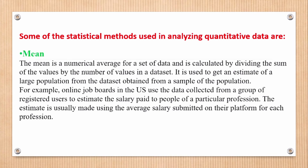The first statistical method is the mean. The mean is a numerical average for a set of data and is calculated by dividing the sum of the values by the number of values in a data set. It is used to get an estimate of a large population from the data set obtained from a sample of the population. For example, online job boards in the US use data collected from a group of registered users to estimate the salary paid to people of a particular profession, using the average salary submitted on the platform for each profession.